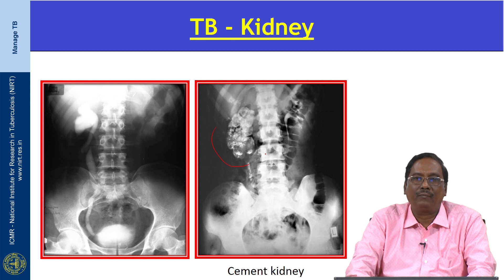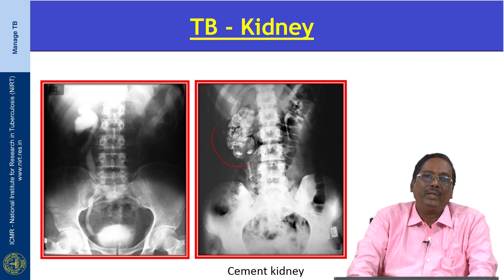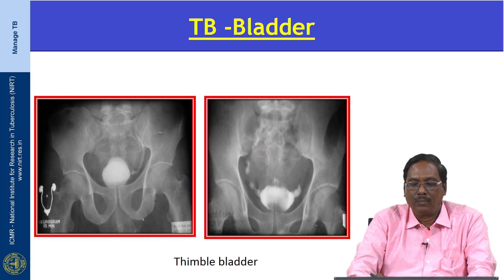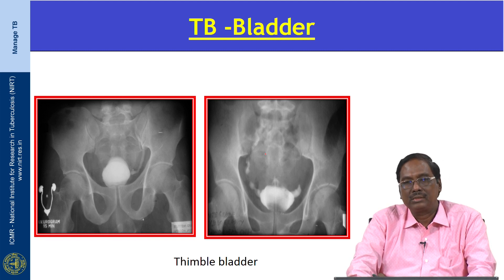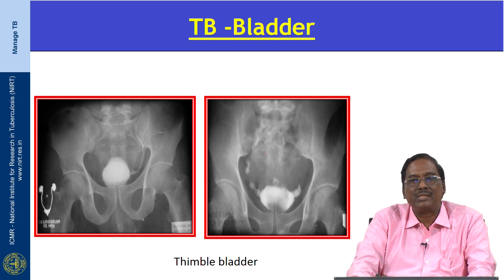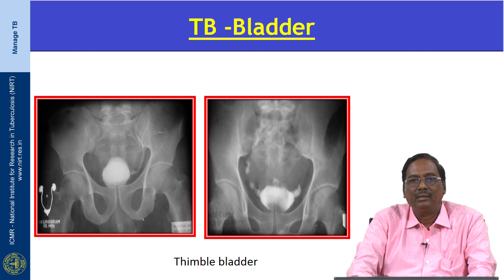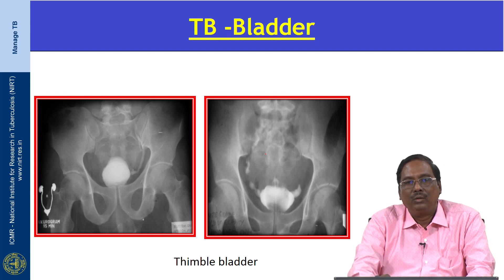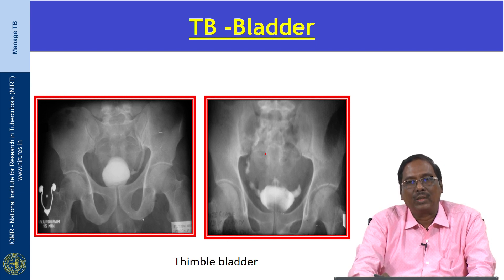Next is tuberculosis involving the bladder. TB usually involves the wall of the bladder, causing calcification in the wall and contraction, reducing bladder capacity. This is called a thimble bladder, which is pathognomonic of TB bladder in tuberculosis.